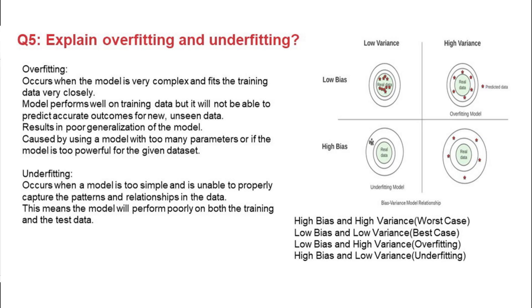Next question: explain overfitting and underfitting. Whenever this comes up, explain it using the graph or using the four-quadrant diagram with low bias, low variance, high bias, and high variance. Overfitting occurs when the model is very complex and fits the training data very closely — it learns a lot and gives good results on training, but when given unseen or test data, it gives poor results, resulting in poor generalization. It is caused by using a model with too many parameters or one that is too powerful for a given dataset.